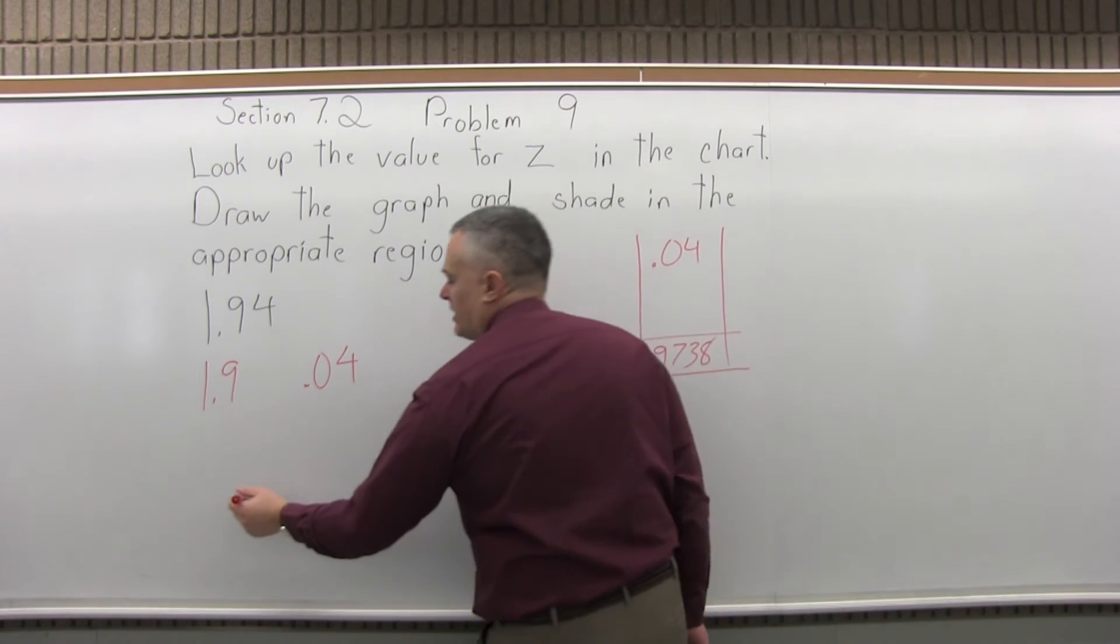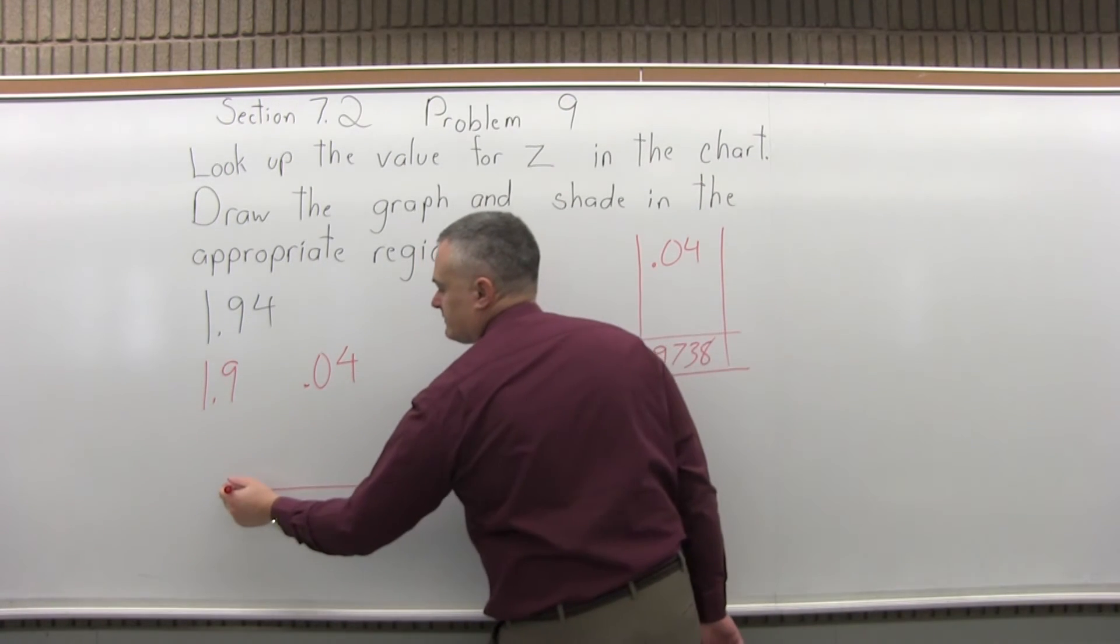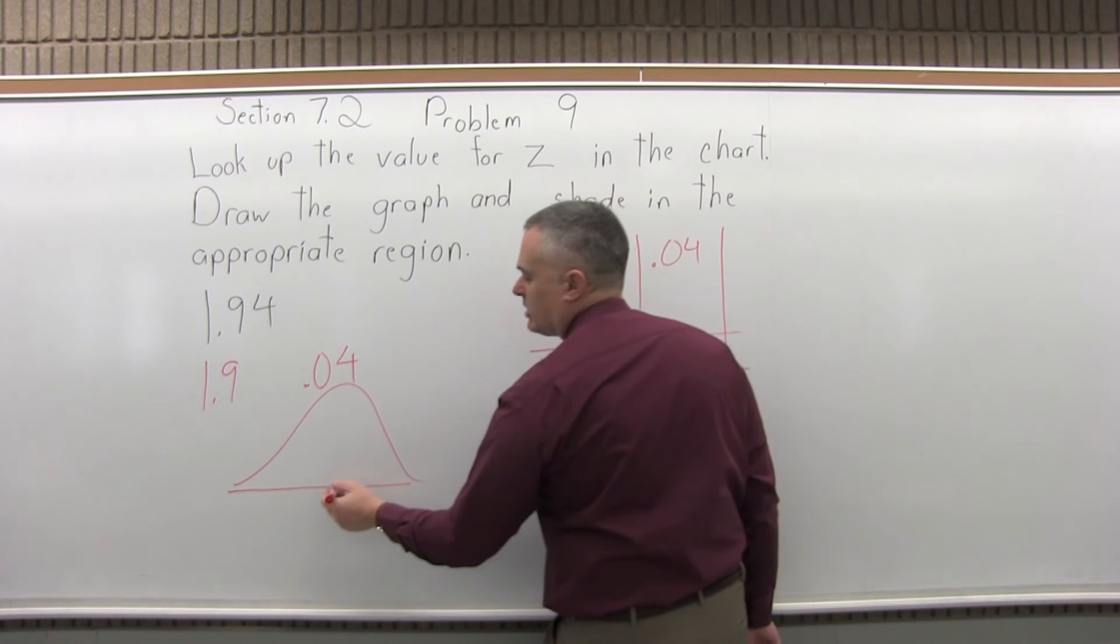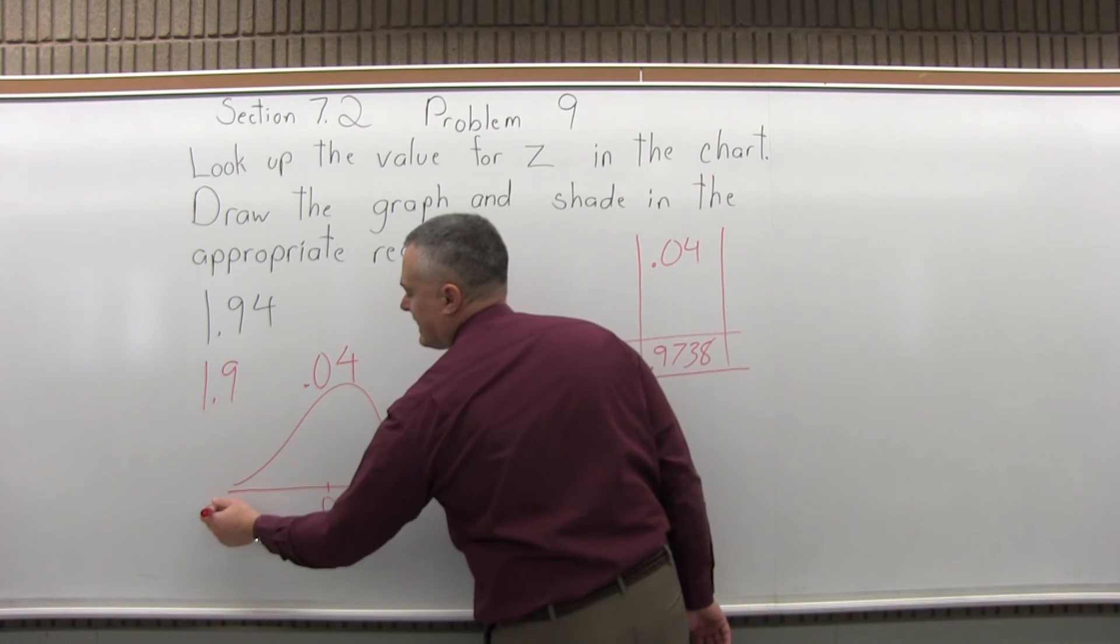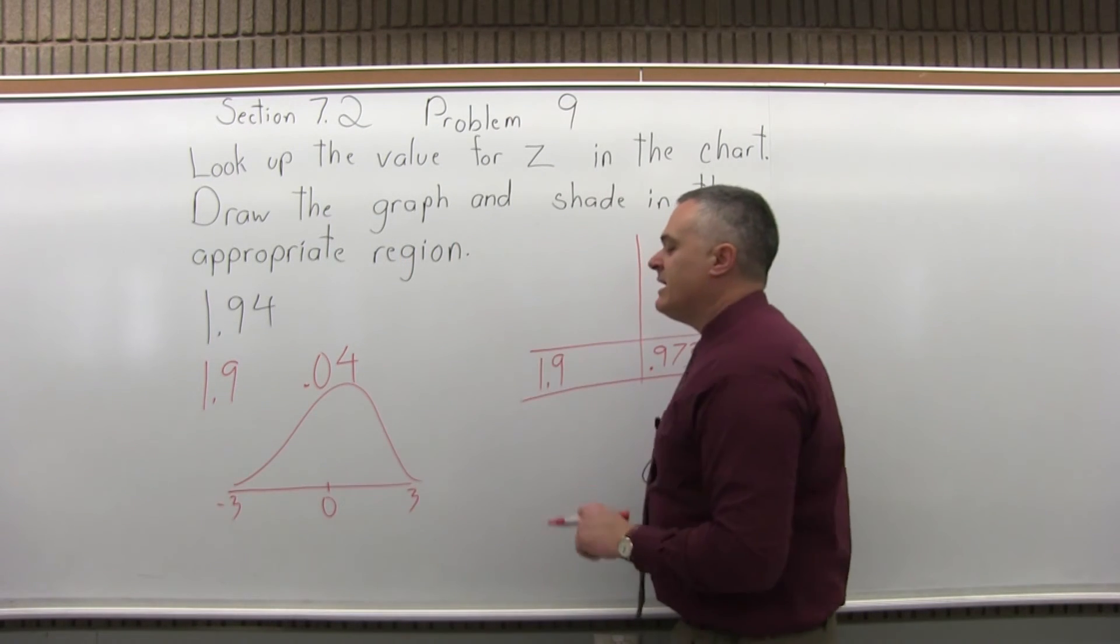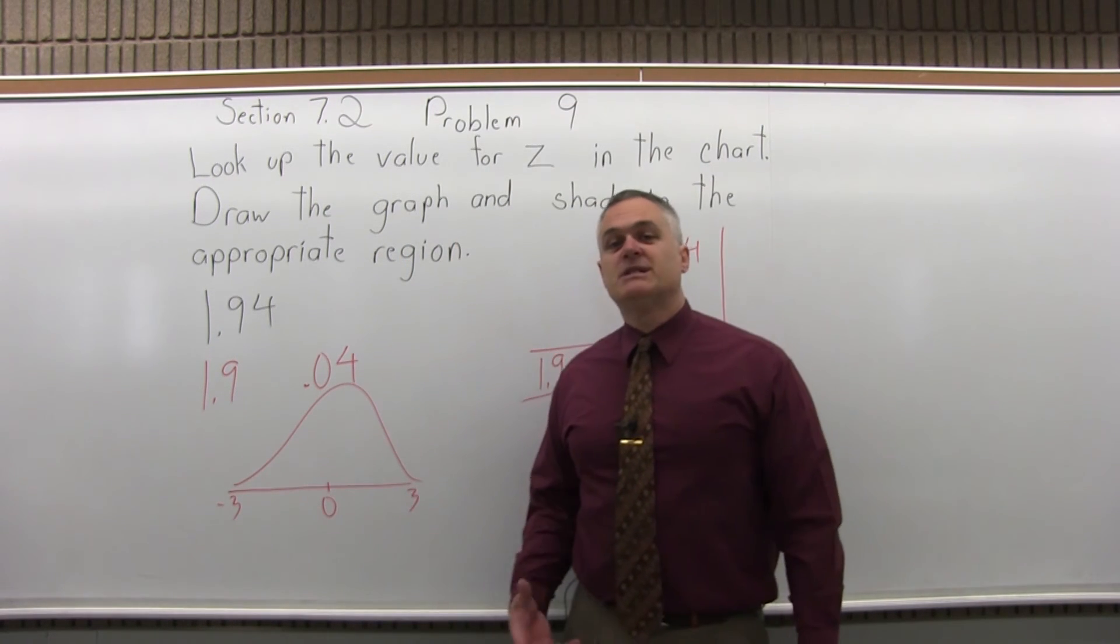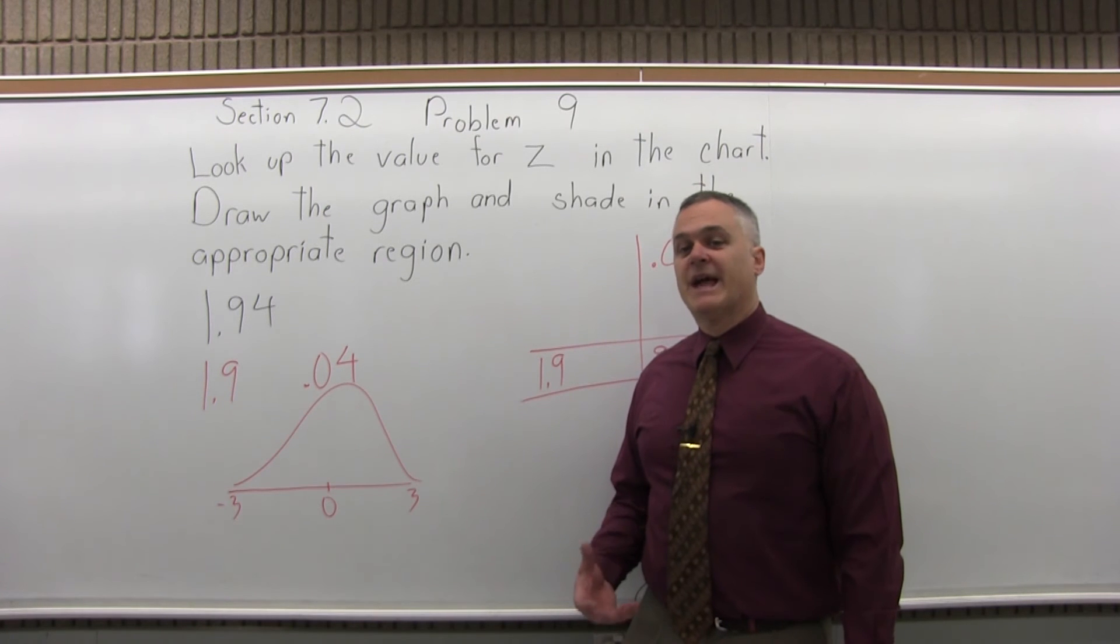So if you draw the bell curve, and then we'll label the bottom, right in the center we'll put a 0, positive 3 on the right, and a negative 3 on the left. And these numbers represent how many standard deviations you are away from the average value.